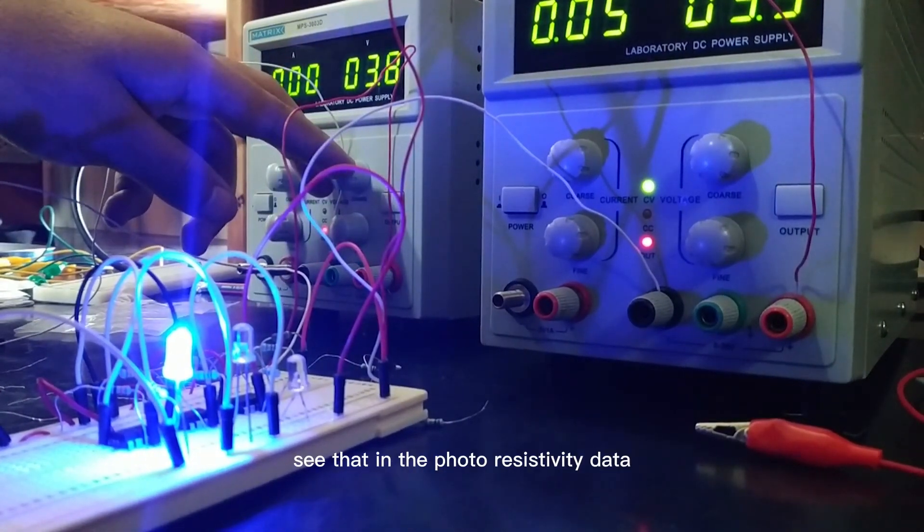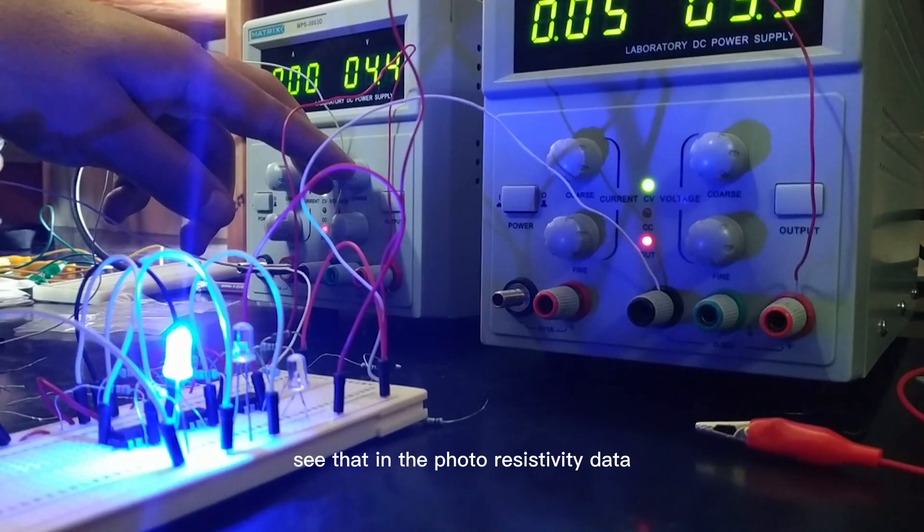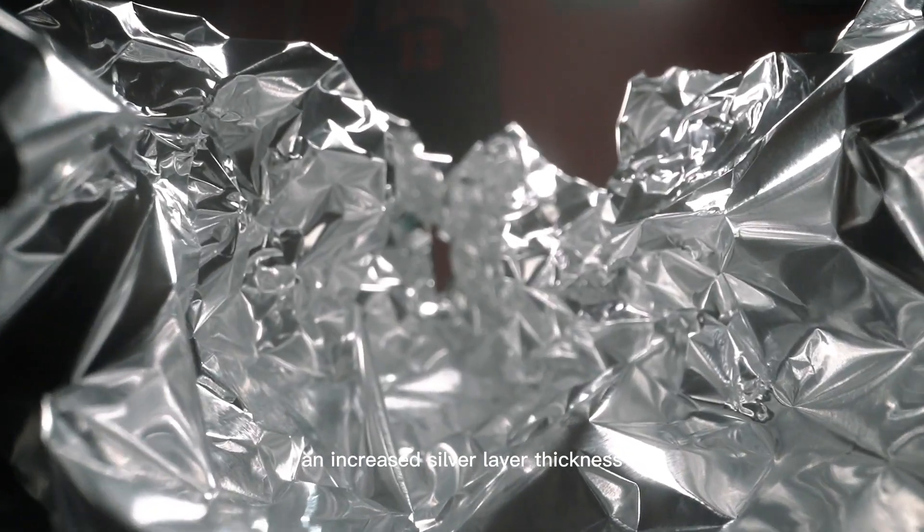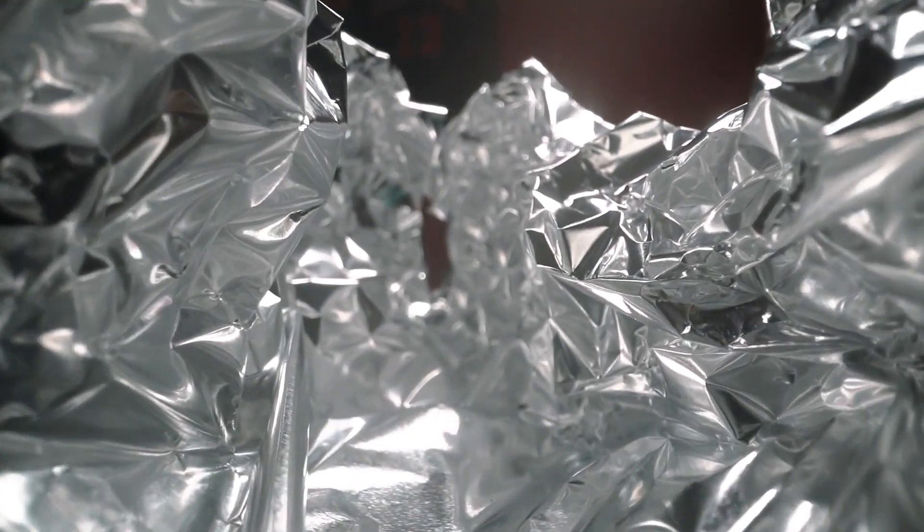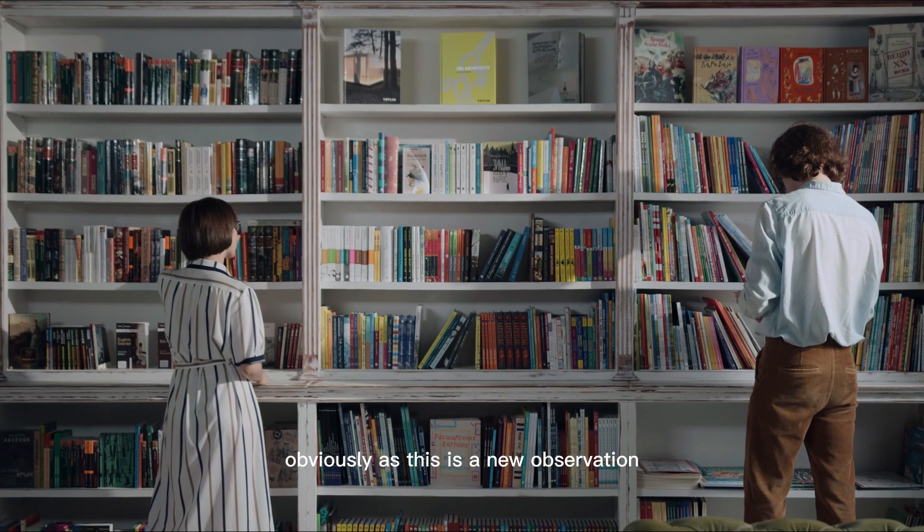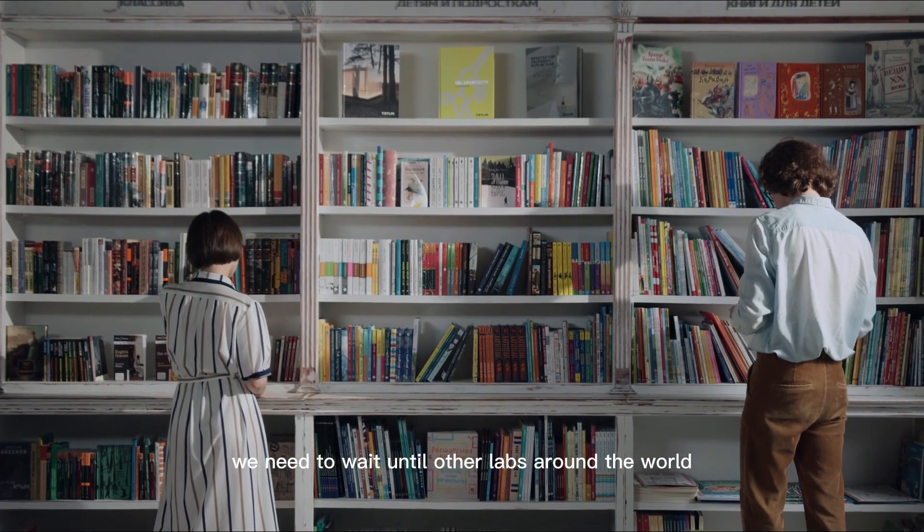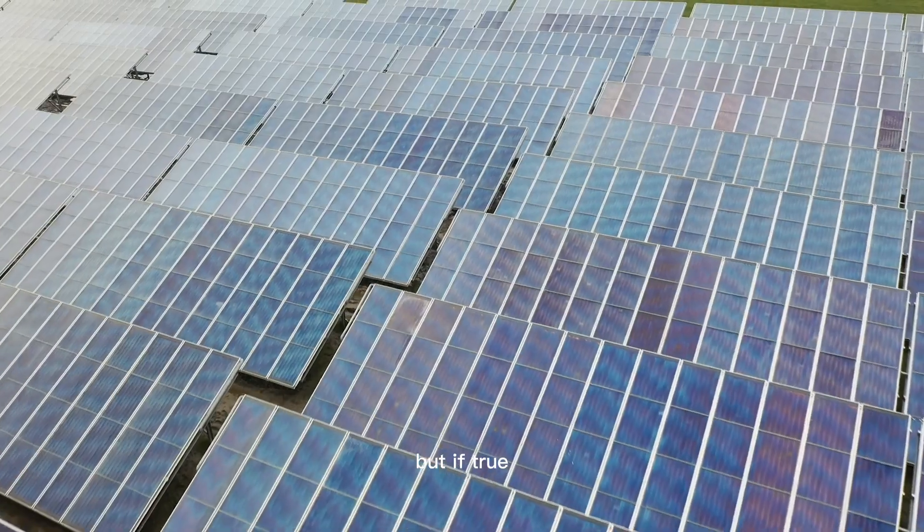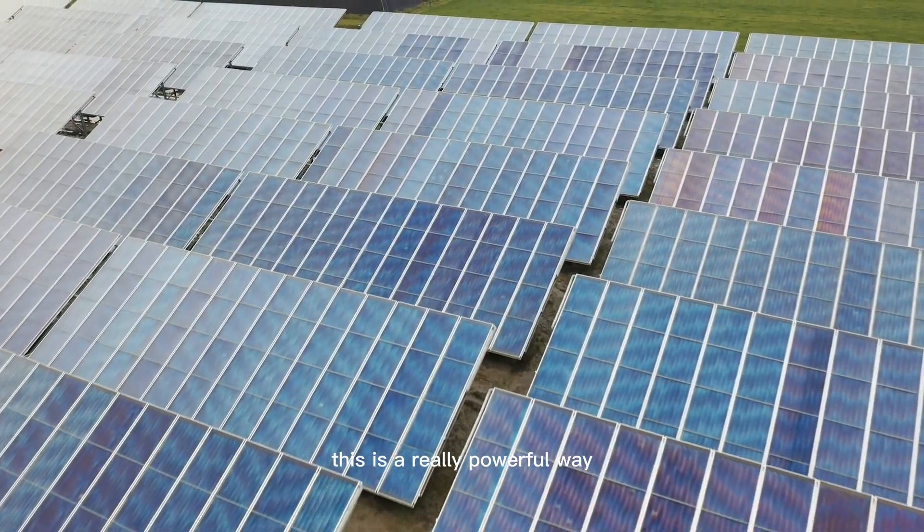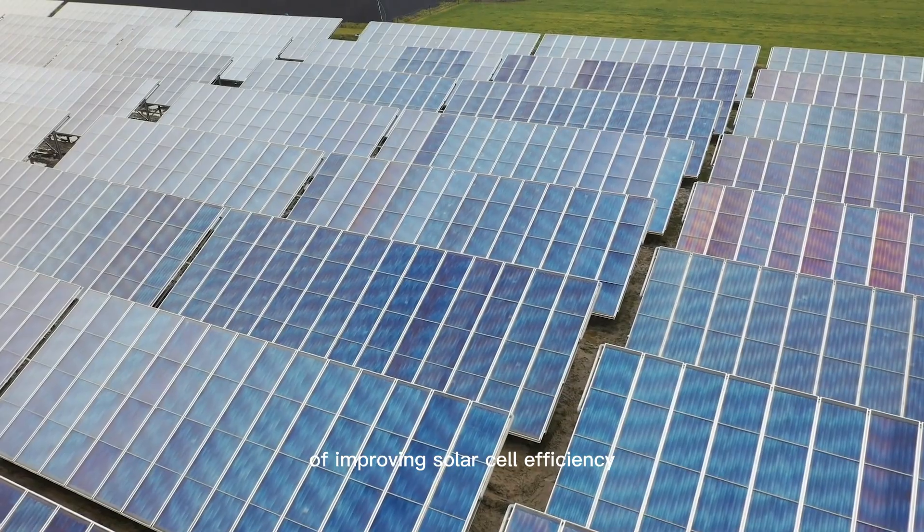And we absolutely see that in the photoresistivity data. An increased silver layer thickness produces a significantly higher photocurrent. Kind of amazing. Obviously, as this is a new observation, we need to wait until other labs around the world confirm that it does in fact happen this way. But if true, this is a really powerful way of improving solar cell efficiency.